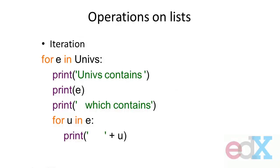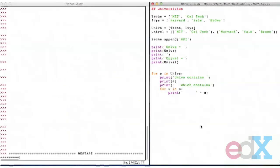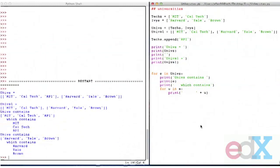Let's look at an example. I've already bound the variable `univs`, and so this says I'm going to let `e` in turn be each element in `univs`, and I can do things like print out some information about them. And since each of those elements is itself a list, I can have another loop where I loop over `e`, letting `u` be each element inside of there, and print something out. If we go over to my idle screen, I'm just printing out the value of `univs` and `univs1`, and then at the bottom you can see that loop where I print some information and loop through each of the pieces inside of that structure.